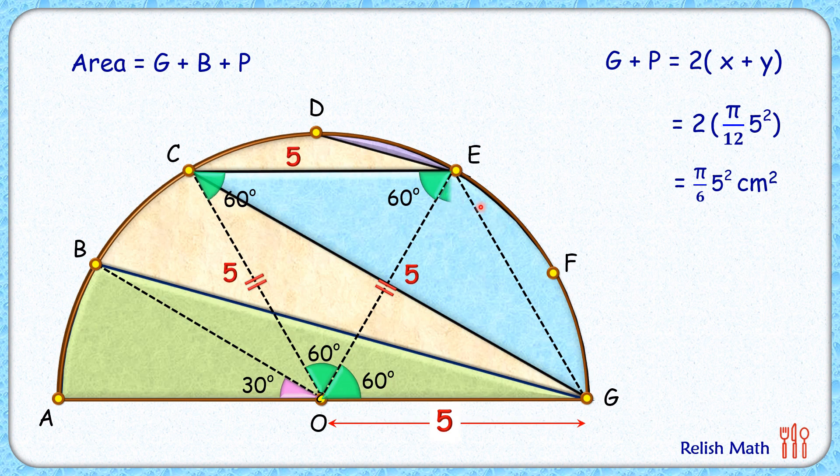By the same logic, this angle E will also be 60 degrees. Now if we look carefully, CO and EG are two lines in which OE is transverse. This angle 60 and this angle 60 are alternate interior angles. As alternate interior angles are equal, we can say these two lines are parallel to each other.